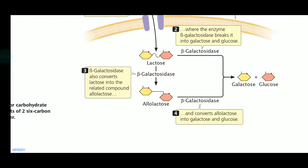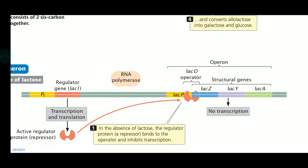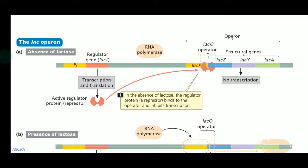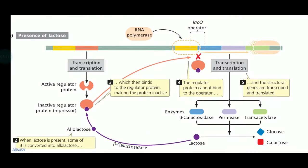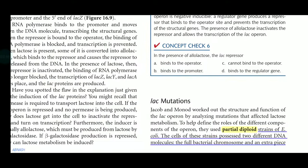Acetyltransferase causes the formation of allolactose from glucose and lactose, and this allolactose acts as your inducer. The basic structure of the typical lac operon in the absence of lactose shows the repressor going and binding with the operator region, blocking RNA polymerase from undergoing transcription. When lactose is present, transcription proceeds. But we are here to talk about lac mutation.